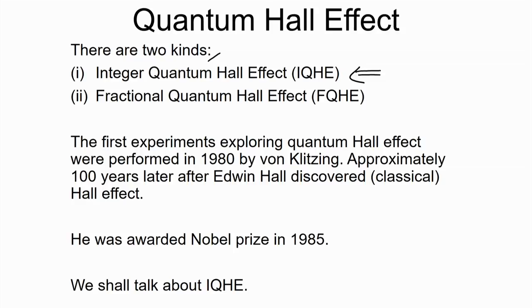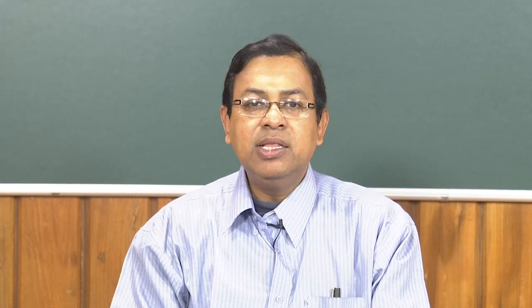I will just mention what the fractional case is, but we will not get into that discussion because it requires interactions to be taken into account. The first experiments exploring the quantum Hall effect were performed by Von Klitzing in 1980, approximately 100 years after Edwin Hall discovered the classical Hall effect. Klitzing was awarded the Nobel Prize in 1985 for this discovery, and you will see why this experimental discovery is so important as to warrant a Nobel Prize.